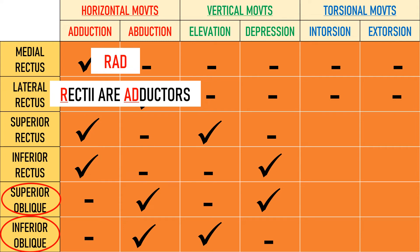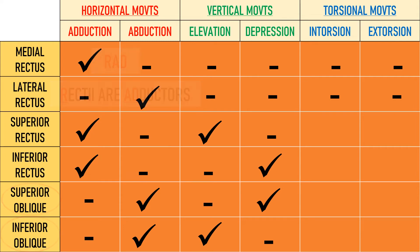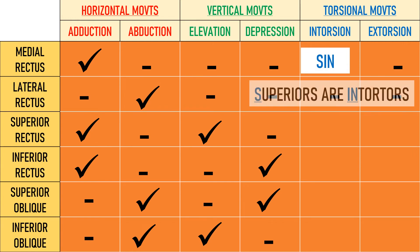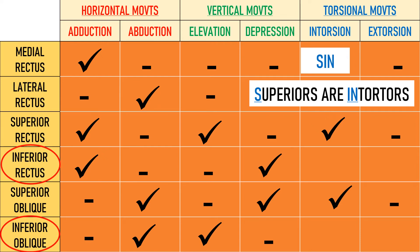Lastly, let's talk about torsional movements. The word to remember here is SIN — S-I-N — which means that superiors are intorsors. So the two superiors, superior rectus and superior oblique, cause intorsion of the eye, and the remaining two muscles, the inferiors — inferior rectus and inferior oblique — cause extorsion of the eye.